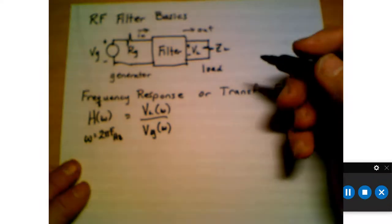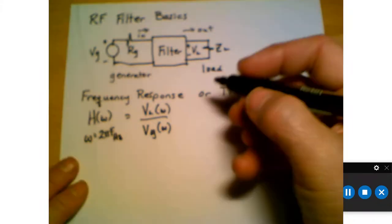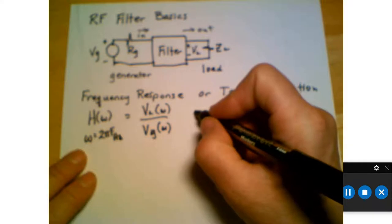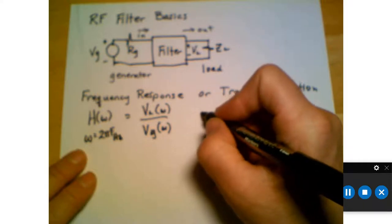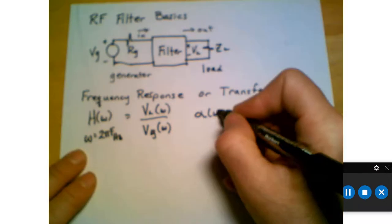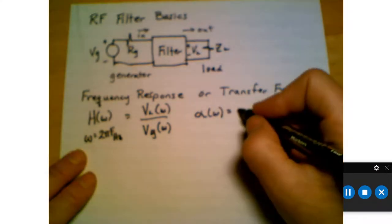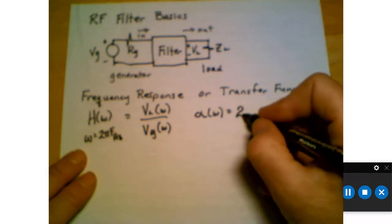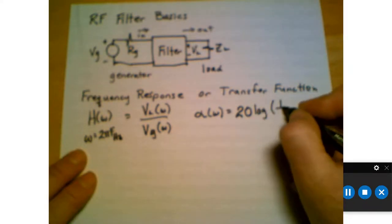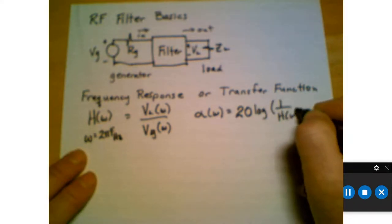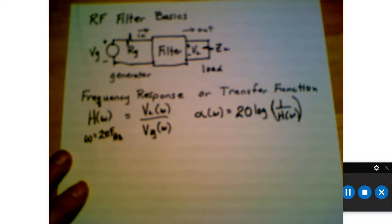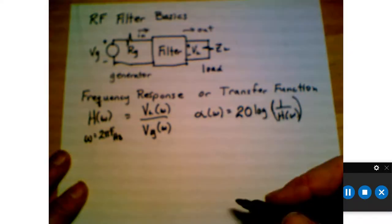This is the frequency response, and we can define that either in terms of a linear value or in terms of decibels. When we define it in terms of decibels, we normally talk about alpha, or the attenuation, as a function of frequency, and we define that based on power. So we're going to use 20 log of 1 over H of omega. That's how we define the frequency response or the transfer function.